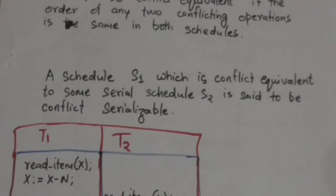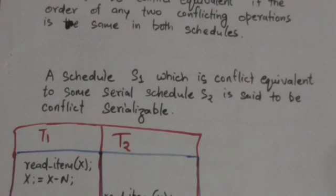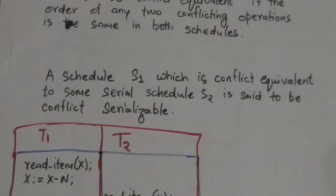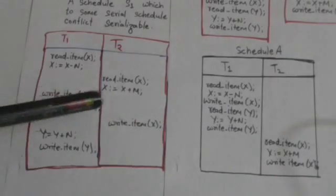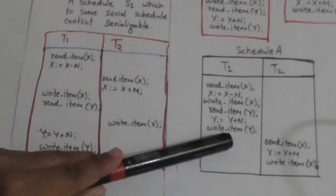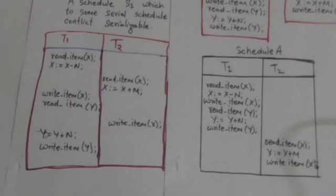If in two schedules the order of any two conflicting operations is the same, their result will be the same and they are said to be conflict equivalent. A schedule S1 which is conflict equivalent to some serial schedule S2 is said to be conflict serializable. This will be more clear after the following example.